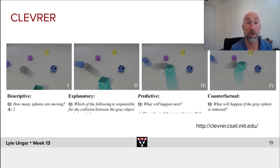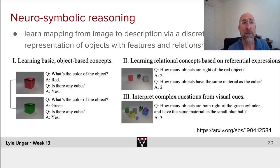Or which one of these things is responsible for the great object being knocked? Or prediction, which is what most of neural nets will ask. Where will the blue square go? Or things that are hard for current neural nets to answer, like counterfactuals. What will happen if the gray sphere is plucked out and removed?